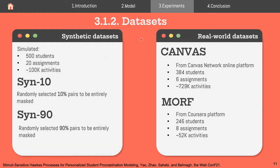We consider both simulated and real-world datasets. In the simulated one, we simulated 500 students, 20 assignments, and around 100,000 activities. We randomly selected 10% of student-assignment pairs to be entirely missing, producing SYNC 10, and 90% missing to produce SYNC 90. For real-world data, we obtained the Canvas dataset from Canvas Network with 384 students, 6 assignments, and around 729,000 activities. We also obtained the Quasora dataset from the Morph platform with 246 students, 8 assignments, and around 42,000 activities.